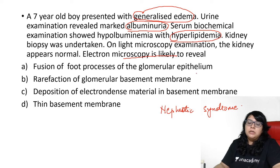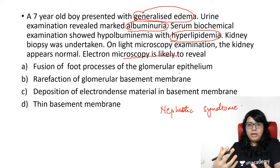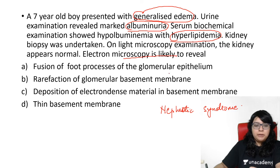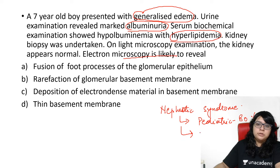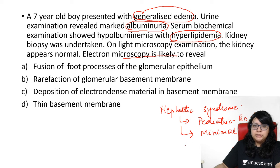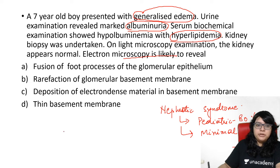We know that electron microscopy shows the typical finding of fusion of the foot processes of the glomerular epithelium. Now, regarding nephrotic syndrome — the most important point is that it is most common in the pediatric age group, as much as 80% common. The most common type of nephrotic syndrome is minimal change disease.